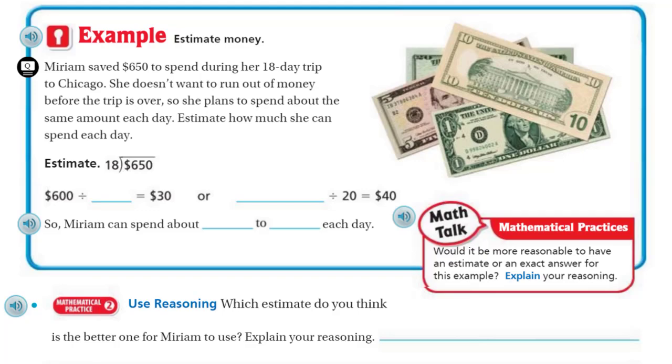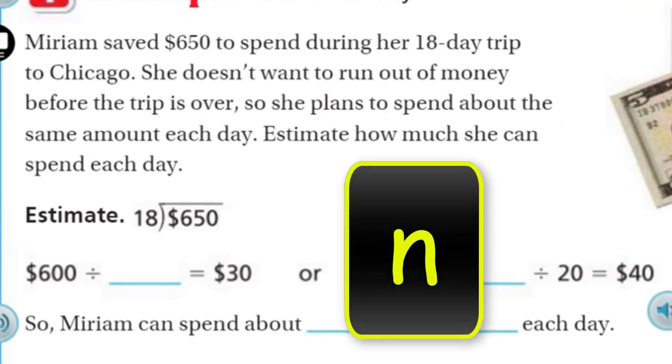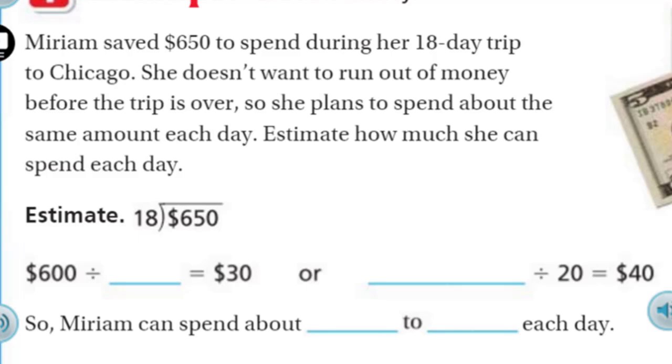Now, it says, example. Estimate money. It says, Miriam saved $650 to spend during her 18-day trip to Chicago. She doesn't want to run out of money before the trip is over, so she plans to spend about the same amount each day. Estimate how much she can spend each day. It's a great real-world problem here. So we have the $650 divided by the 18 days. She wants to spend about the same amount every day. And so, if we took the $600 and we divide it by, we're going to want a number that's going to be compatible. Since the $600, we did change here. In this case, normally we change the divisor. Here we change the dividend. And what's compatible there is, looks like to me, 20. 20 days. Because 6 divided by 2 is 3, and then we have just the 2 powers of 10 here, minus the 1 power of 10 here. We end up with $30.